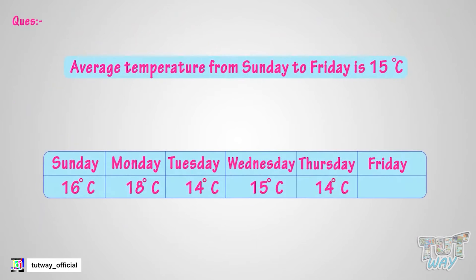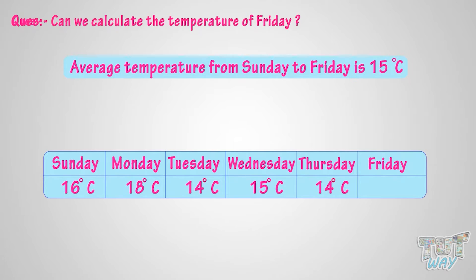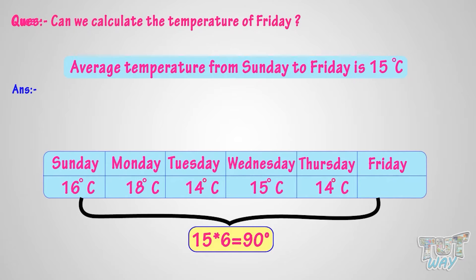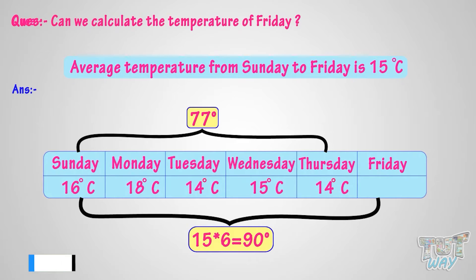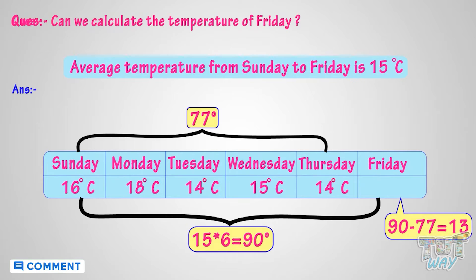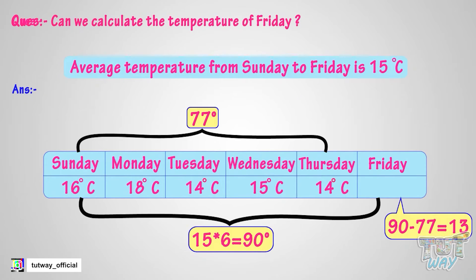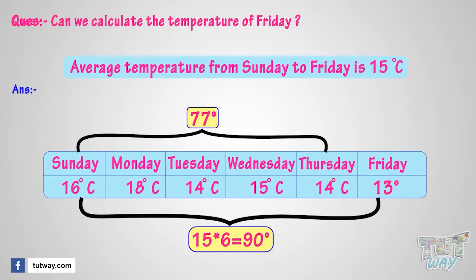The average temperature from Sunday to Friday is 15 degrees Celsius. Can we calculate the temperature on Friday, which is missing? We know 15 multiplied by 6 equals 90, so 90 is the sum of temperatures from Sunday to Friday. The sum of temperatures from Sunday to Thursday is 77. So the temperature on Friday is 90 minus 77, which equals 13 degrees Celsius.